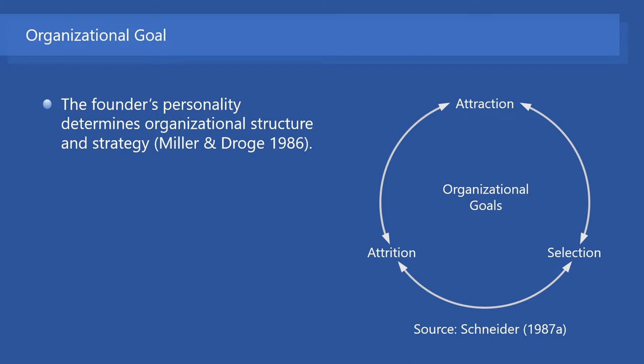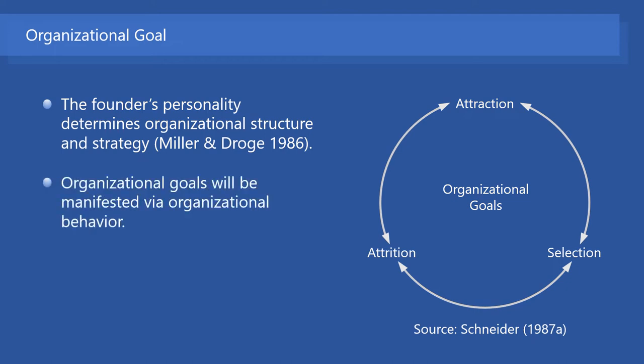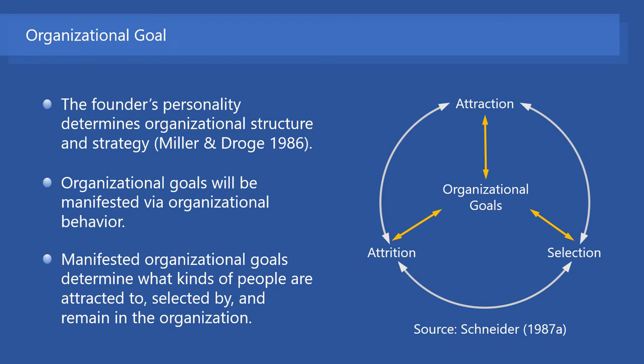Organizational goals are set by the organization founder. Based on the findings of a previous study, the ASA model relies on the proposition that, other things being equal, the founder's personality determines organizational structure and strategy. So the ASA model assumes that organizational goals reflect the founder's personality. Organizational goals will be manifested via organizational behavior, which will construct the organizational structure and process. These manifested organizational goals will determine what kinds of people are attracted to, selected by, and remain in the organization.